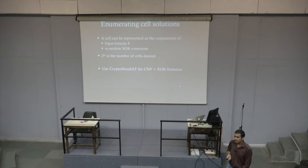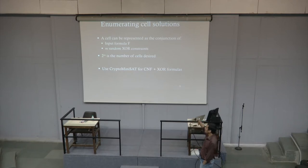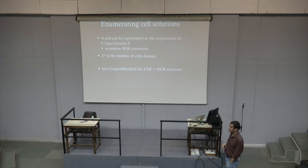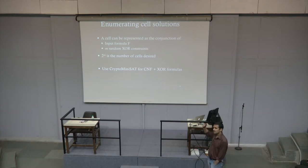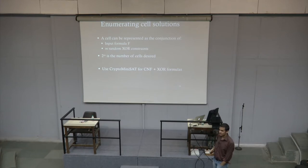A cell is a conjunction of the original formula with M random XOR constraints, where 2^M is the desired number of cells. Since the input formula is given as CNF, we have CNF and XOR constraints together. CryptoMiniSat handles these kinds of formulas well, allowing us to scale to large formulas.